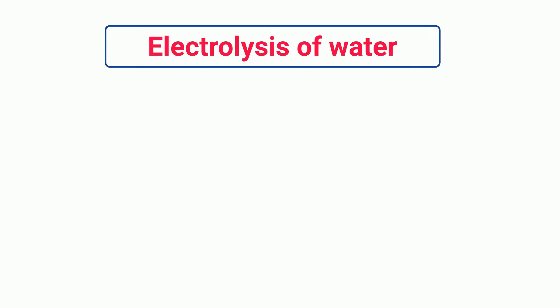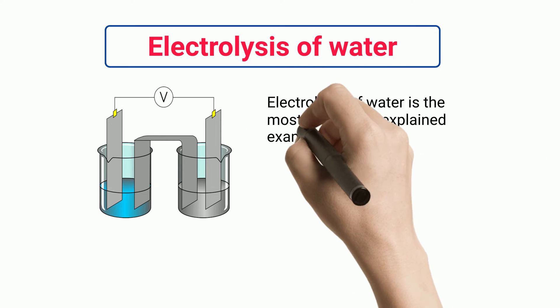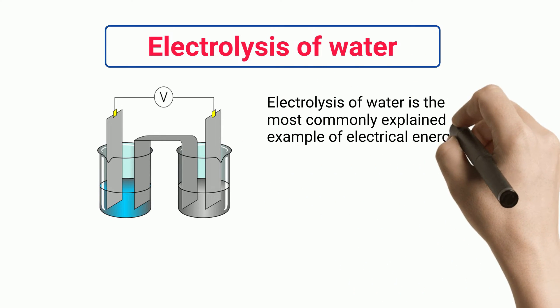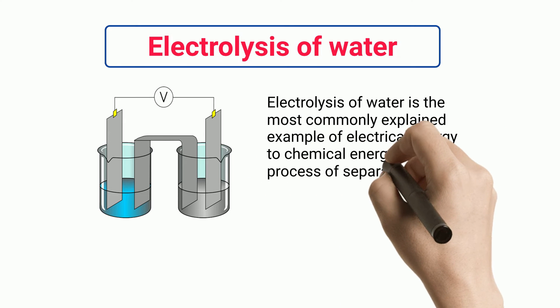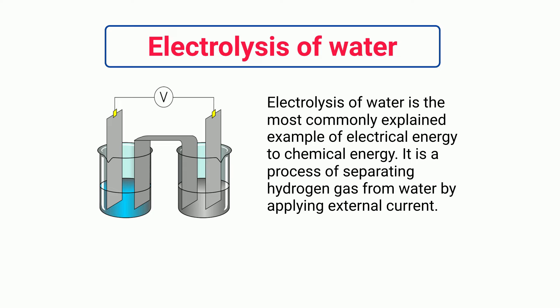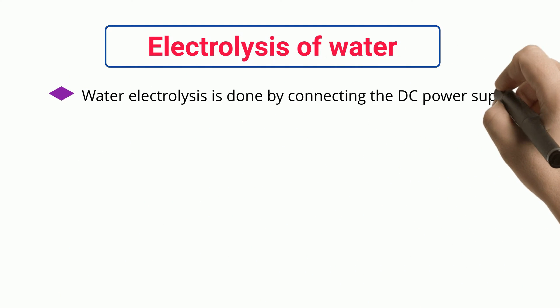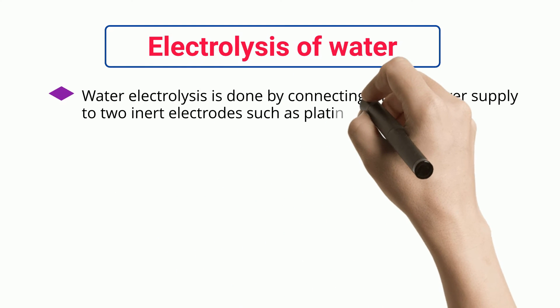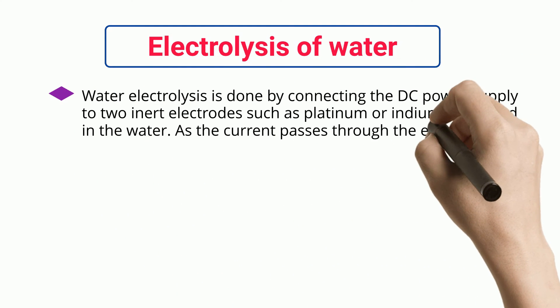Electrolysis of Water. Electrolysis of water is the most commonly explained example of electrical energy to chemical energy. It is a process of separating hydrogen gas from water by applying external current. Water electrolysis is done by connecting a DC power supply to two inert electrodes such as platinum or indium immersed in the water.